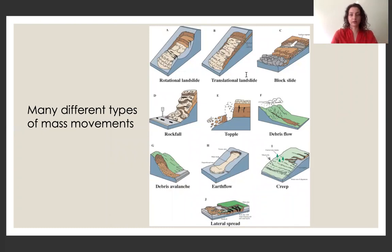On a very broad scale, there are many different kinds of mass movements, including different types of landslides, as well as many forms of liquefaction, as you can see here in the diagram.